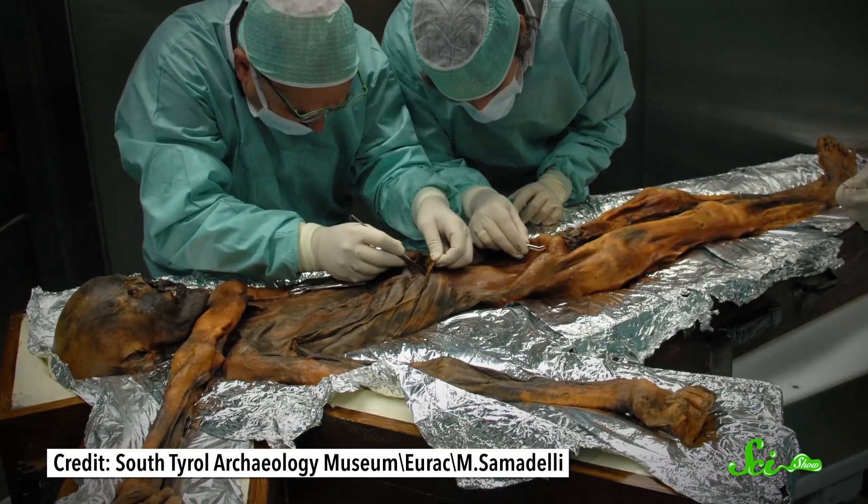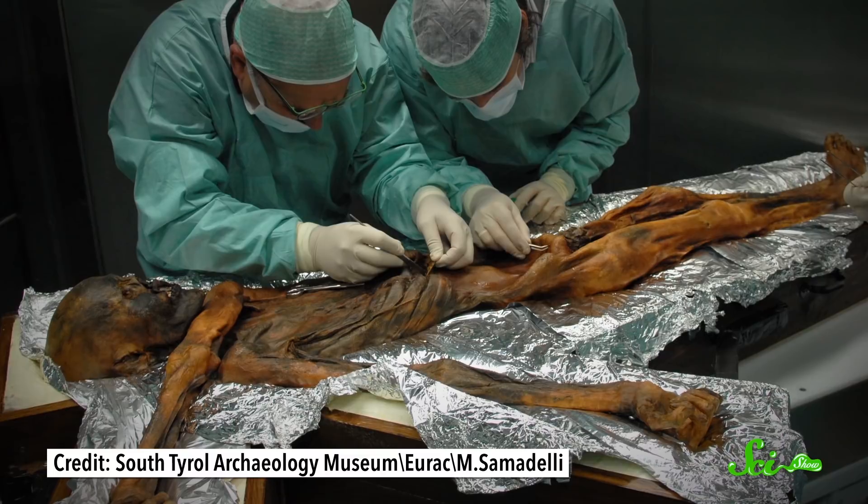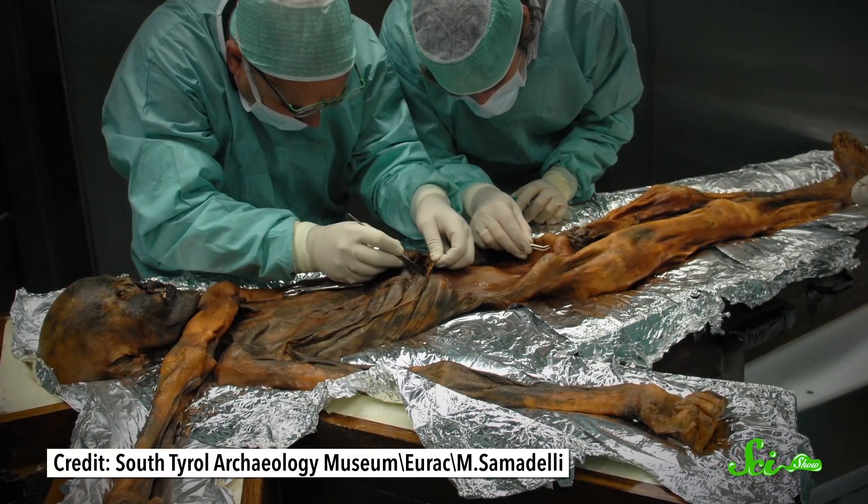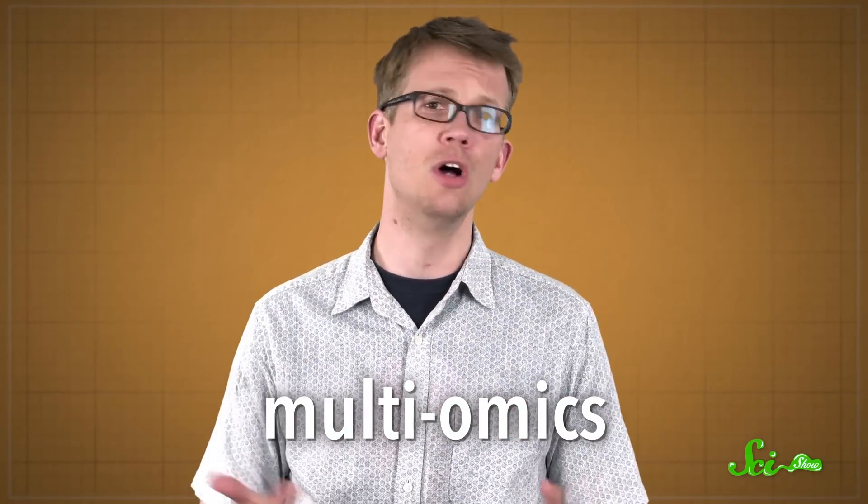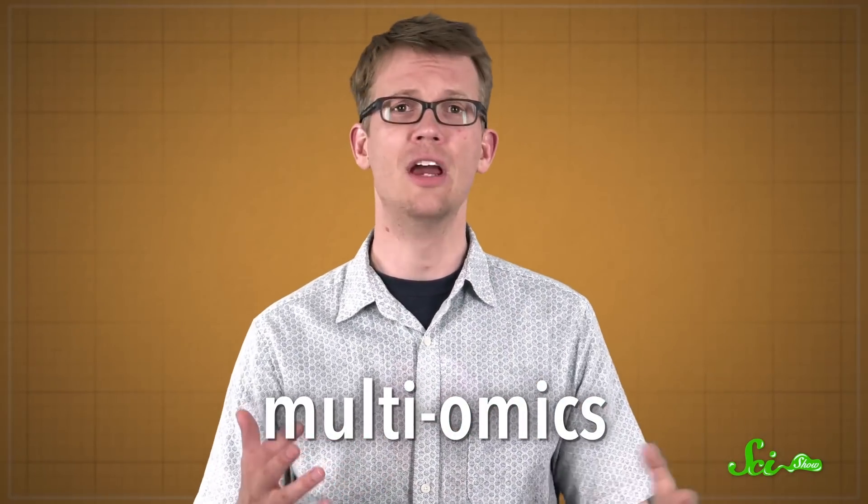For this study, researchers at the Institute for Mummy Studies in Italy, yes that's a thing, took 11 samples from the Iceman's gastrointestinal tract, including the stomach. They used what they call a multiomics approach to make sense of the material, which means they tried to take stock of all the biomolecules present—the metabolites, the proteins, the lipids, and DNA.